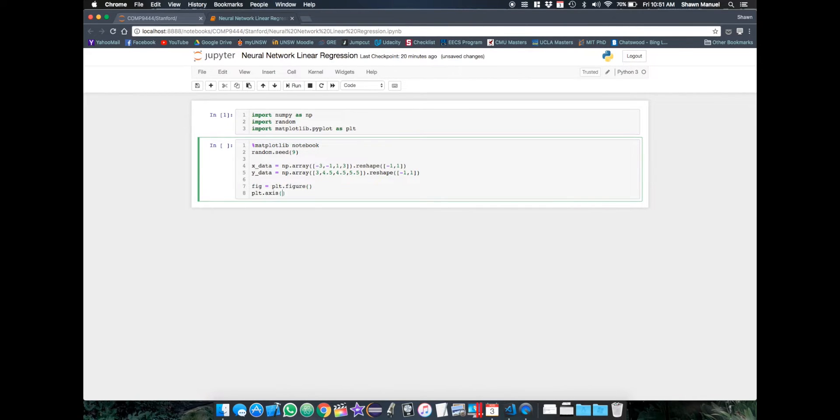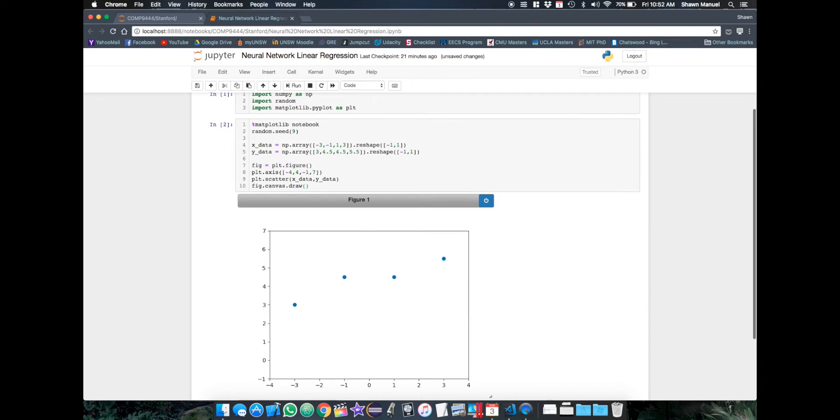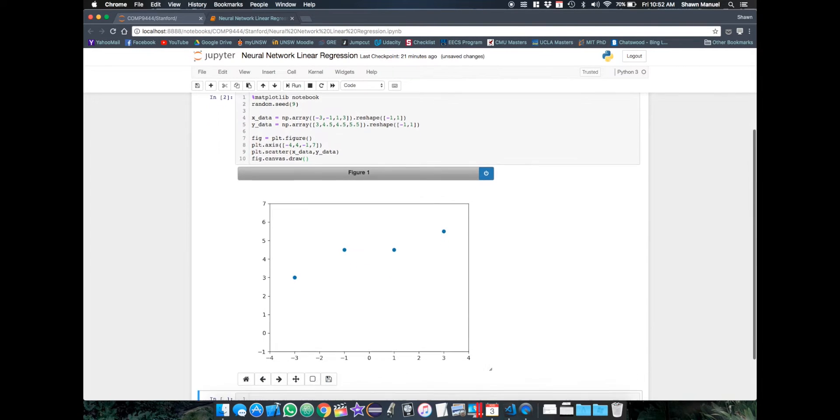So let's plot the data to see what it looks like. I'm going to create a new figure and set the axes to show the whole data. And then we're going to plot the data as a scatter plot and draw the figure. So this is what our data looks like. Pretty standard.